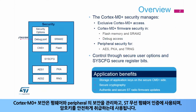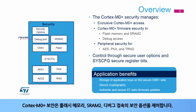The Cortex-M0 Plus Security manages the firmware and peripheral security and is used to authenticate the ST Radio firmware and allows the secure handling of cryptographic keys. The Cortex-M0 Plus Security uses secure options to control flash memory, SRAM2, and debug security.